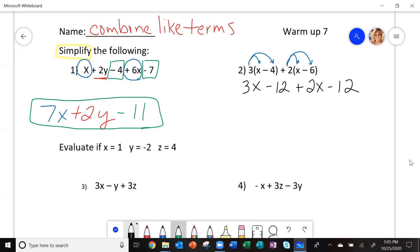Now combine like terms. I've got 3x and 2x. That's going to give me 5x. Then I have negative 12 and negative 12. That's a negative 24 or minus 24. This is your simplified form.